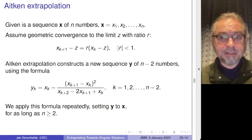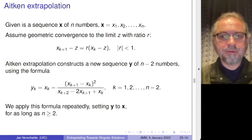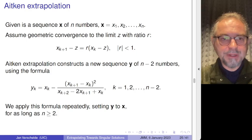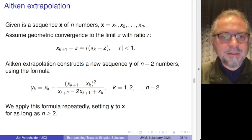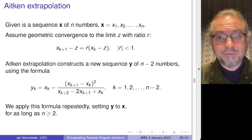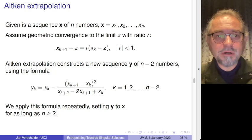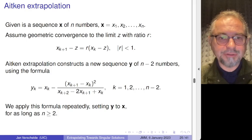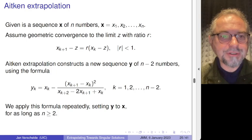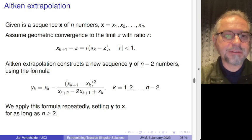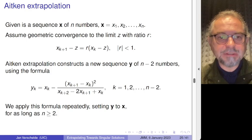Aitken extrapolation assumes geometric convergence. If you make this assumption — you have the limit of your sequence, call it Z, and the ratio between two consecutive errors should be geometric and a constant less than one — then by doing some algebraic manipulations, eliminating this convergence ratio R, you actually get to this sequence transformation. This formula is covered in most good introductory texts in numerical analysis. Just as with Richardson extrapolation, you apply this formula repeatedly.